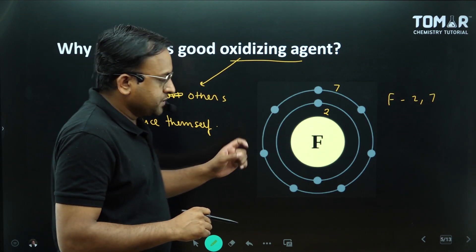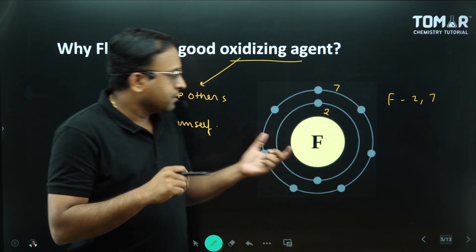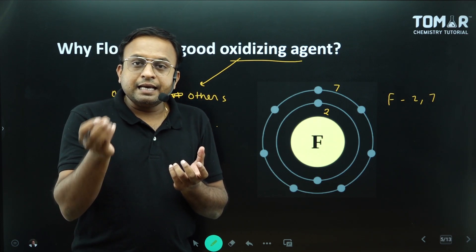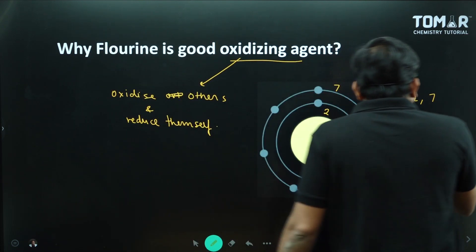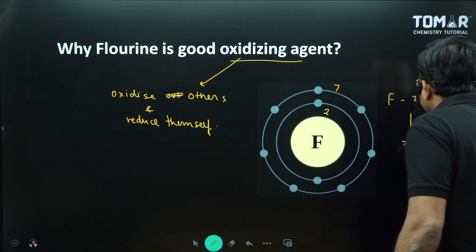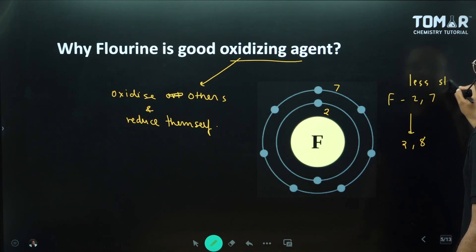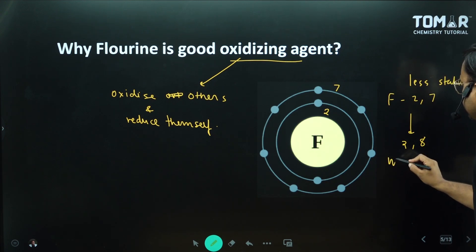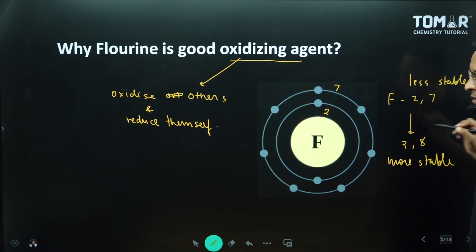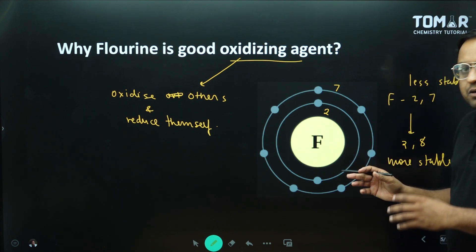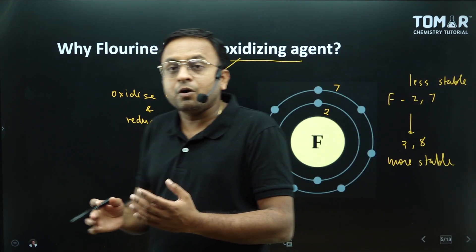Now why does fluorine do this? Fluorine's configuration is 2 and 7. If it takes one electron, it will become 2 and 8. Fluorine wants to complete its octet — it wants to become more stable. So fluorine takes one electron to complete its octet.